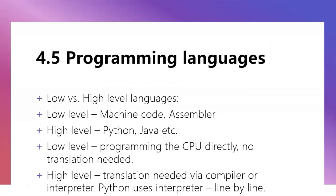Topic 4.5 covers programming languages: high level versus low level. Low level is machine code and assembly — these program the CPU directly, no translation needed, quicker for the CPU, but harder to read and write. High level languages like Python, Java, and C# require translation via compiler or interpreter. Python uses an interpreter — it processes code line by line, so you can pinpoint errors. A compiler creates an executable file which runs faster but you can't see the source code.